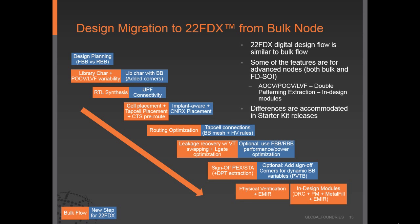Global Foundries has design starter kits available today to assist with the migration of bulk technologies to the 22FDX technology. The design flow is very similar to a bulk technology flow, being an advanced node technology at 22nm. Many new features in the flow are similar to other advanced nodes such as 20nm bulk or 14-16nm FinFET technology. New design features that come with FDSOI — such as forward and reverse body bias block planning, continuous RX-aware placement, body biasing mesh and high voltage rules, and sign-off for PVT and body bias corners — are all easily accommodated in our starter kit release, which is available today.